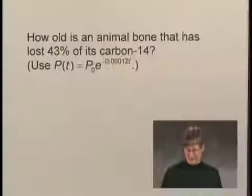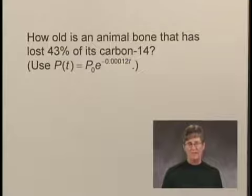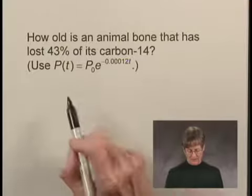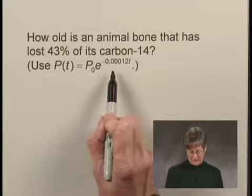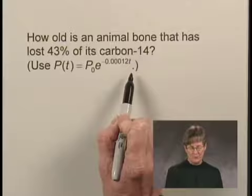This is a carbon dating problem. How old is an animal bone that has lost 43% of its carbon-14? We'll use the function P(t) = P₀e^(-0.00012t).